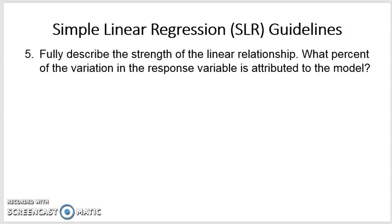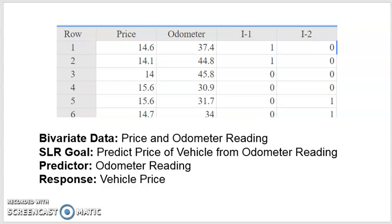The context, again, is we've got a number of vehicles, I think there's something like a hundred, and these are used vehicles. The price of the vehicles is listed in thousands. The odometer reading, and this is a particular make of vehicle, is listed in the odometer column.